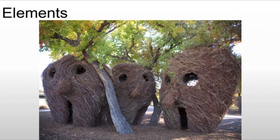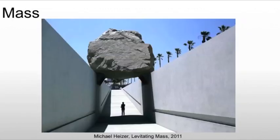Some of these elements include mass. Whereas in 2D we were dealing with the illusion of mass, trying to create the illusion of three-dimensional space, of course we actually have mass with a sculpture. It actually has weight and actual size to it.